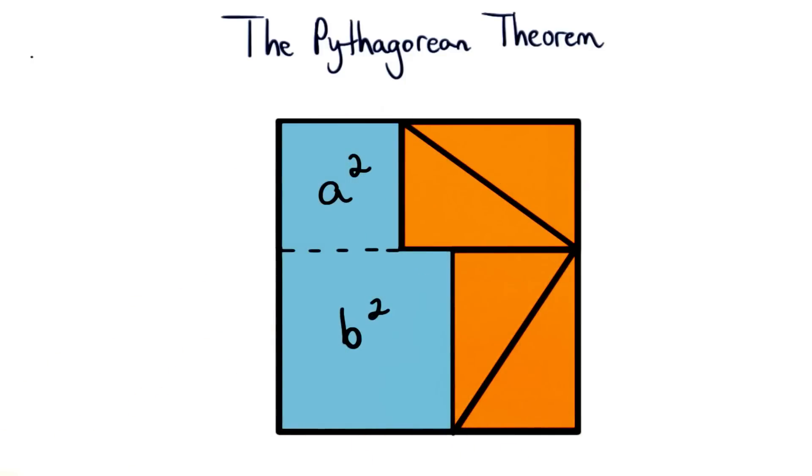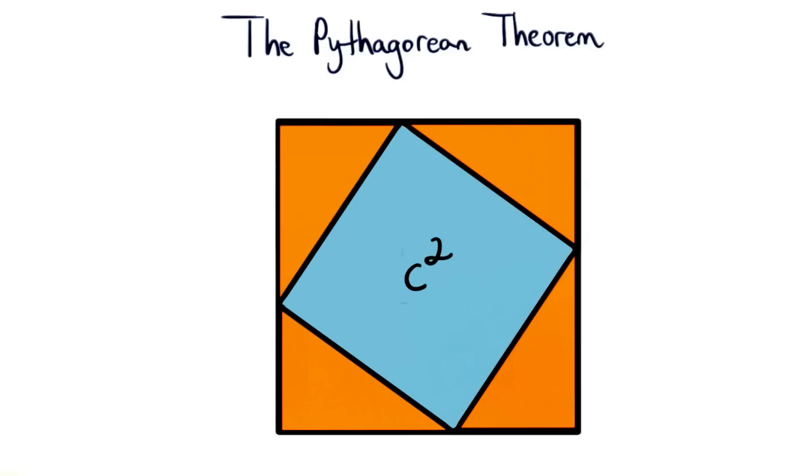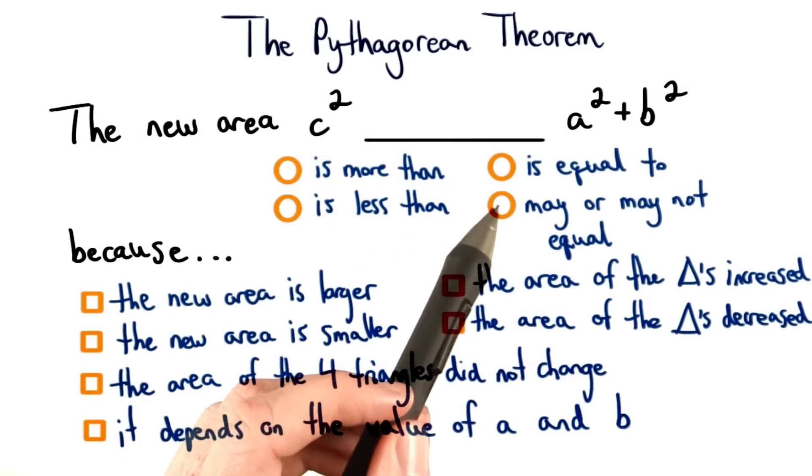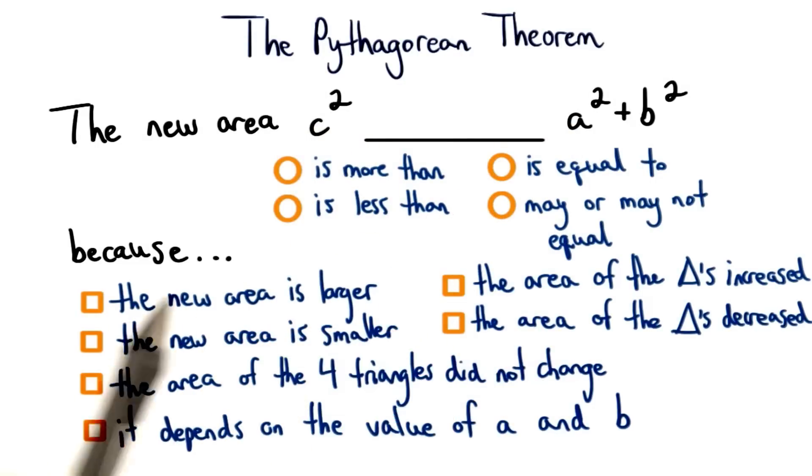So what do we know must be true about this area and this new area? Take some time to think, and then fill in the missing statements to this sentence. Choose one of these statements to make this sentence true, and then check any of these boxes that provide the correct reasoning.